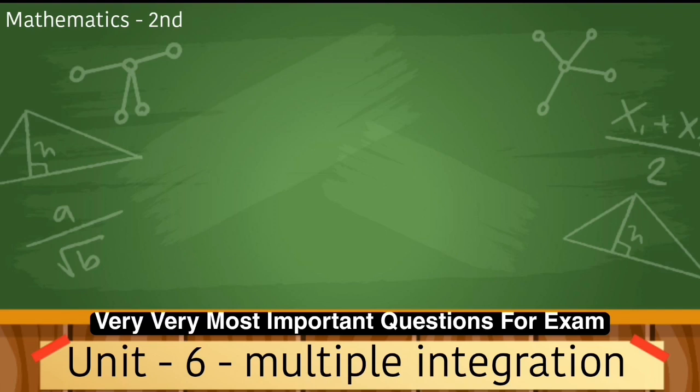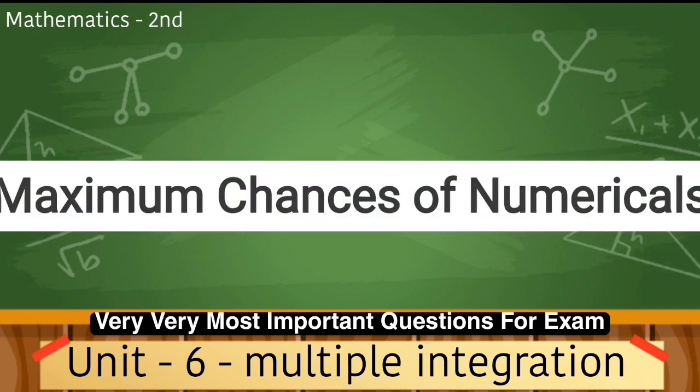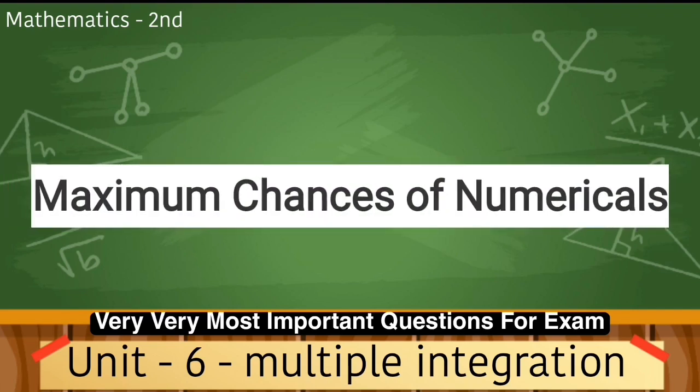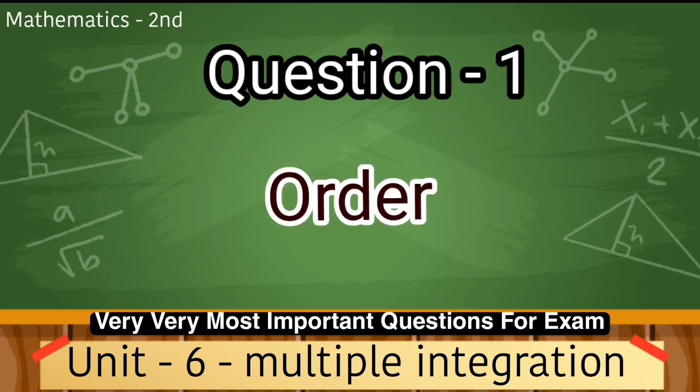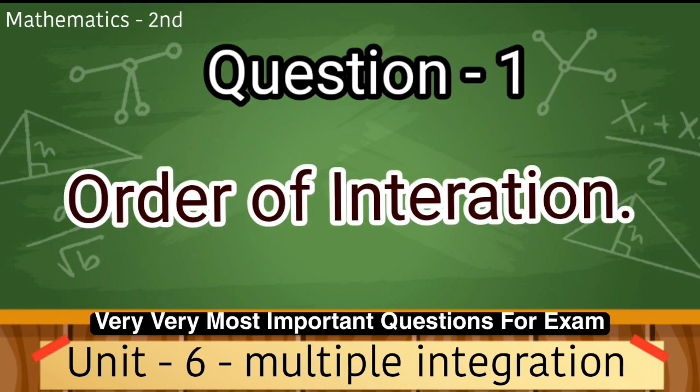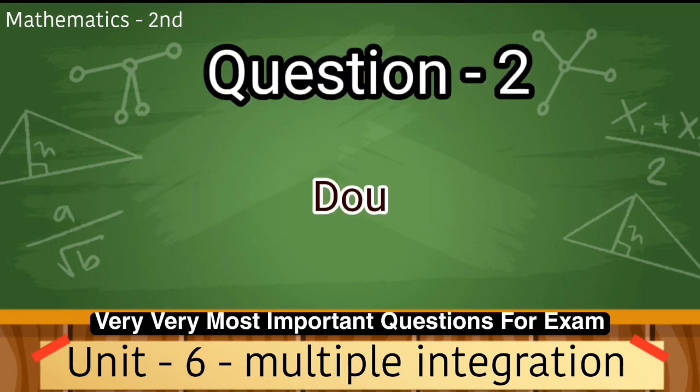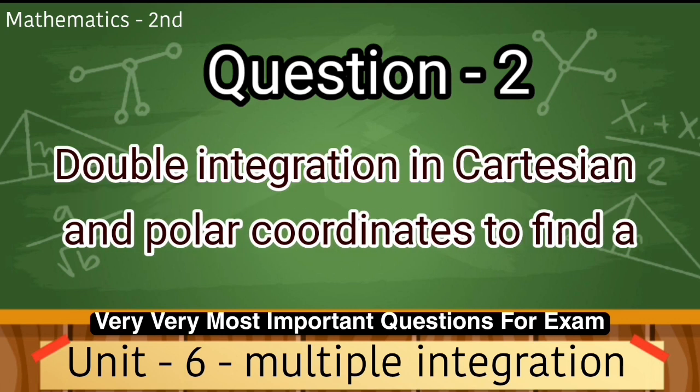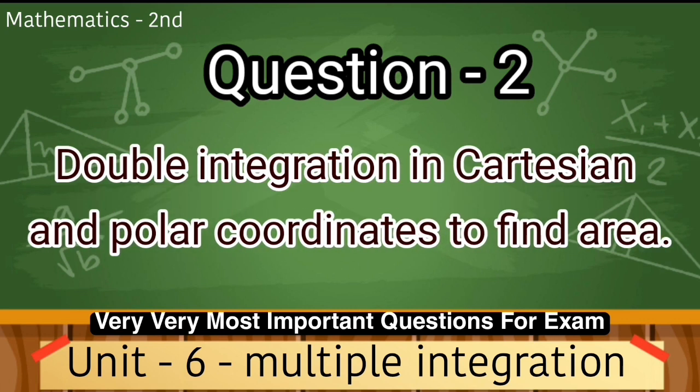Last unit - Multiple integration. Friends, main bata dun, aapko ismein unit number five ki tarah, aapko maximum chances of numericals dekhne ko milenge number six unit mein bhi. Ismein do most important questions hamare. Number one hai: Order of integration. Number second question hai: Double integration in Cartesian and polar coordinates to find area. So, yeh hamari last unit thi.